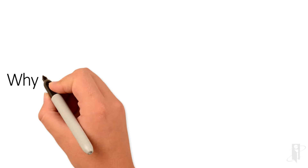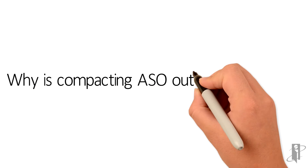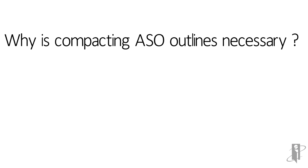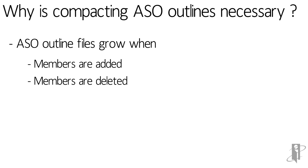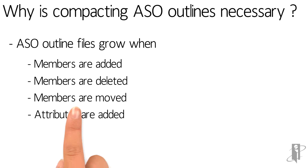So why is compacting ASO Outlines necessary? ASO Outline Files will grow when members are added, deleted, moved, or when attributes are added. This growth can be quite significant. When you delete members or the like, you'd think it would actually clean it up, but it doesn't — it just marks them as deleted, and so it grows and grows and grows.